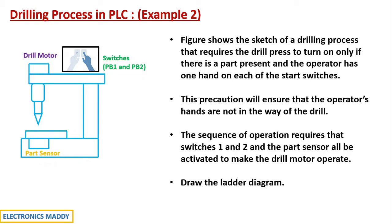The sequence of operation requires that switches one and two and the part sensor all be activated to make the drill motor operate. This is possible only if there is a part recognized by the part sensor and both switches are pressed simultaneously using two hands. Once that is done, the drilling machine starts and it can be a punch process or a continuous drilling operation.